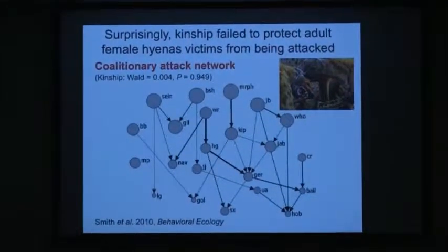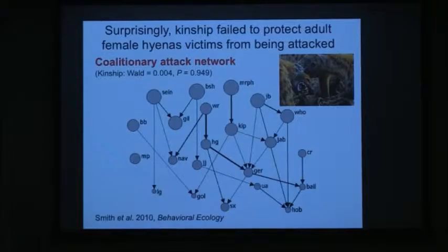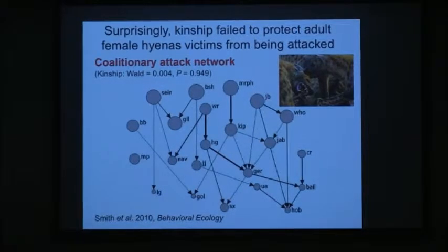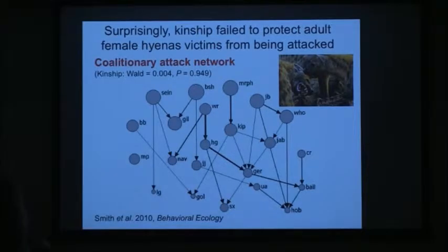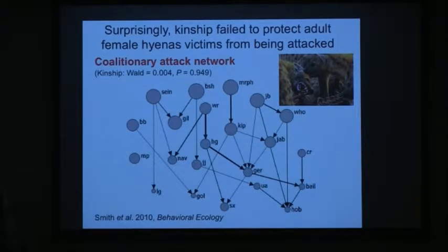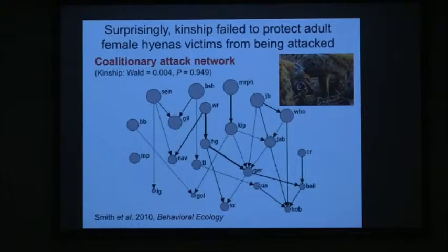We took this one step further to see who they beat up on when forming coalitions. The network shows each individual hyena; larger circles represent high social rank, smaller circles lower rank. High-ranking individuals direct their attacks all the way down the hierarchy toward lower-ranked individuals — always picking on someone they're already socially dominant to — and kinship does not protect individuals from aggression at all. So cooperation is predicted by kinship, but who receives aggression is not.